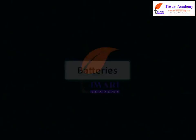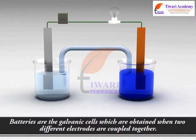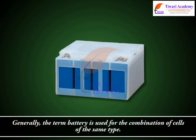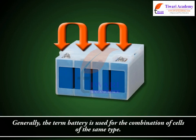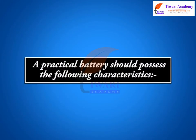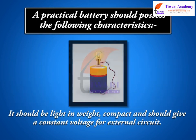Batteries are the galvanic cells which are obtained when two different electrodes are coupled together. Generally, the term battery is used for the combination of cells of the same type. A practical battery should possess the following characteristics: it should be light in weight, compact, and should give a constant voltage for the external circuit.